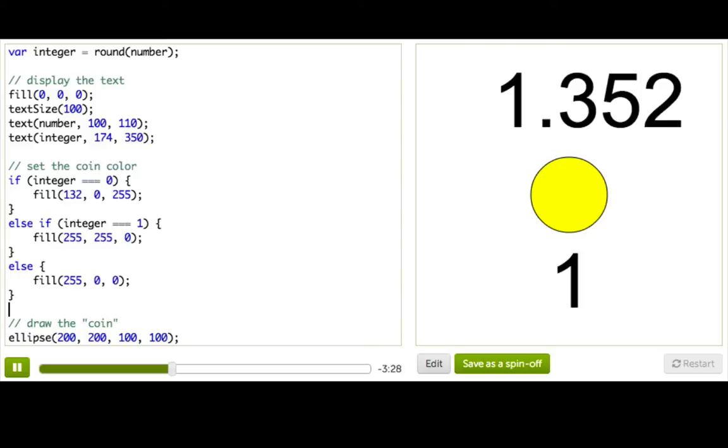Great! So now what this means is if integer is equal to 0, set the color to purple. Otherwise, if integer is equal to 1, set it to yellow.